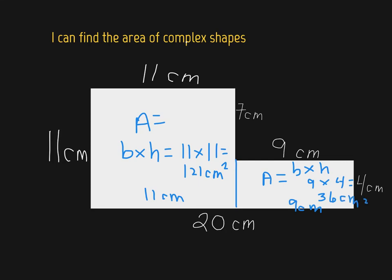Now we found the area of both pieces. Now let's add them together. We have 121 centimeters squared plus 36 centimeters squared, giving us a grand total for this complex shape of 157 centimeters squared.